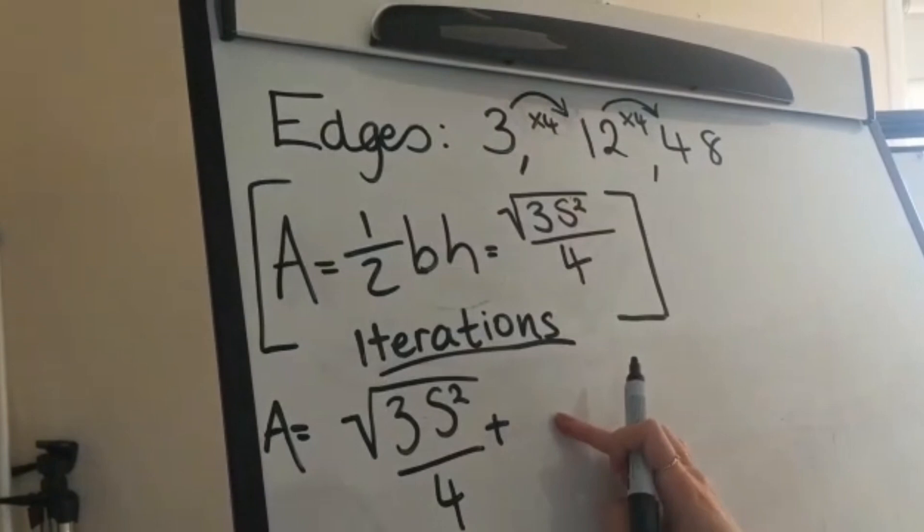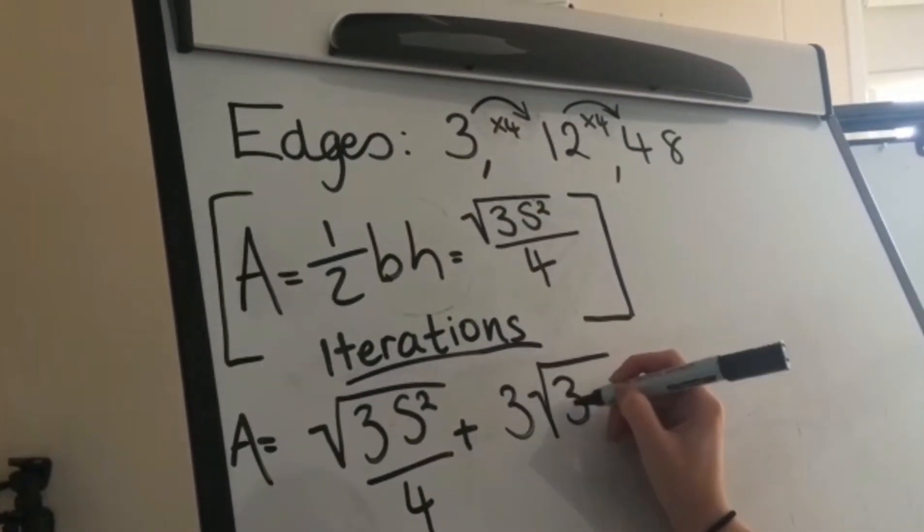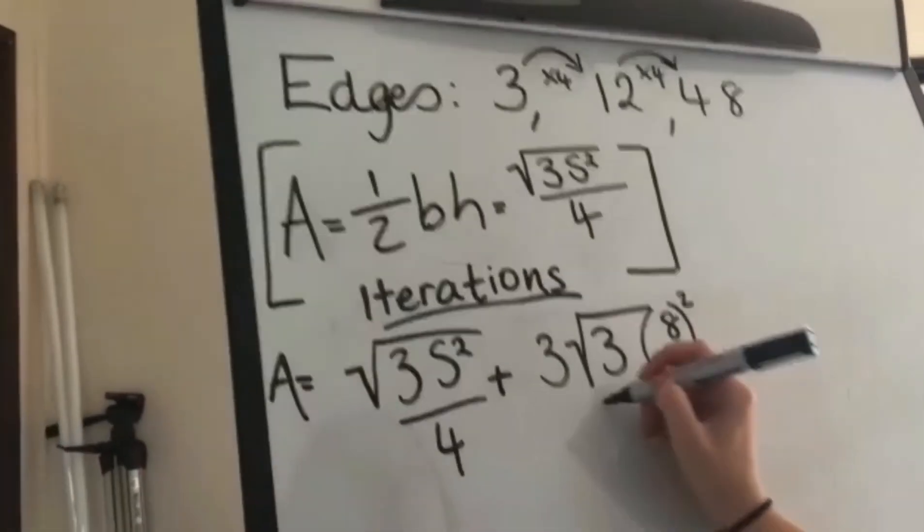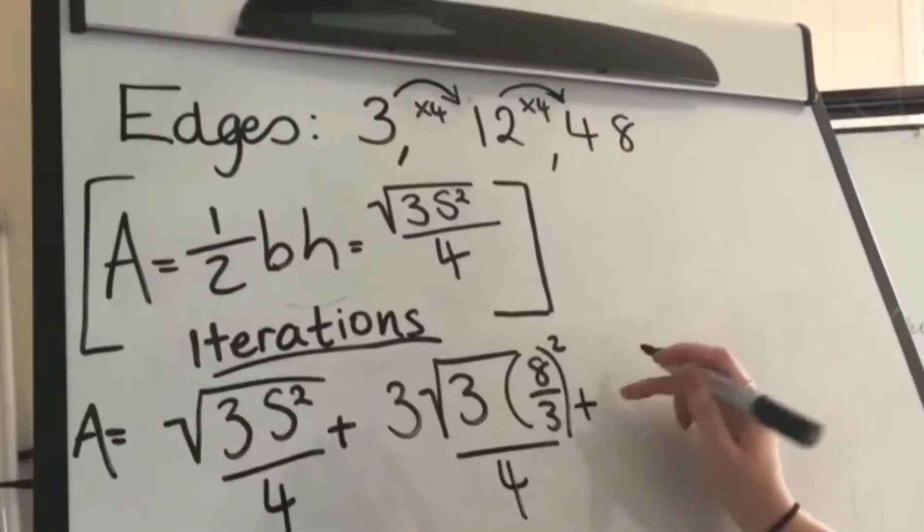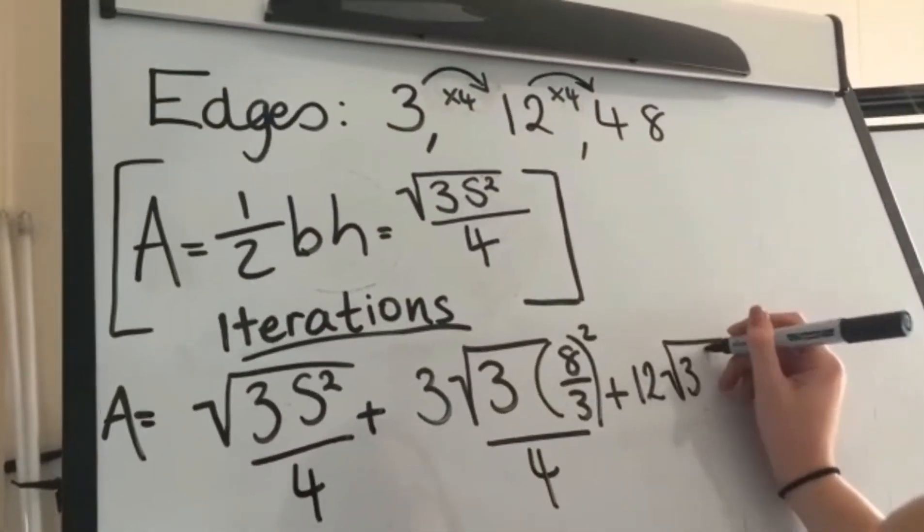So the area increases by three times four to the power of the iteration after the first triangle in order to account for the new triangles. But the sides of the triangles become one third of the previous for every new iteration.